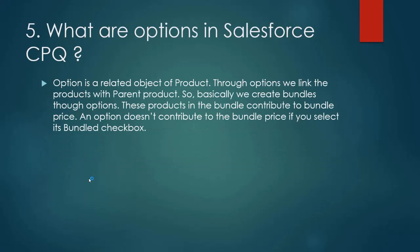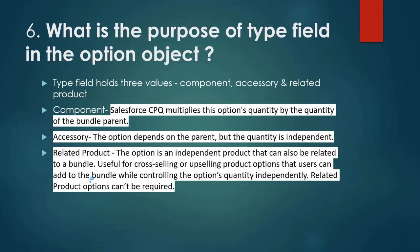What are options in Salesforce CPQ? An option is a related object of a product. Through options we link a product with a parent product — basically we create bundles through options. These products in the bundle contribute to bundle price, but an option doesn't contribute to the bundle price if you select its bundle checkbox. What is the purpose of the type field in the option object? The type field holds three values: component, accessories, and related products. When the type is 'Component', Salesforce CPQ multiplies the option quantity by the quantity of the bundle. For example, if the option quantity is two and the customer buys a quantity of two for the parent product, the option quantity will be four.